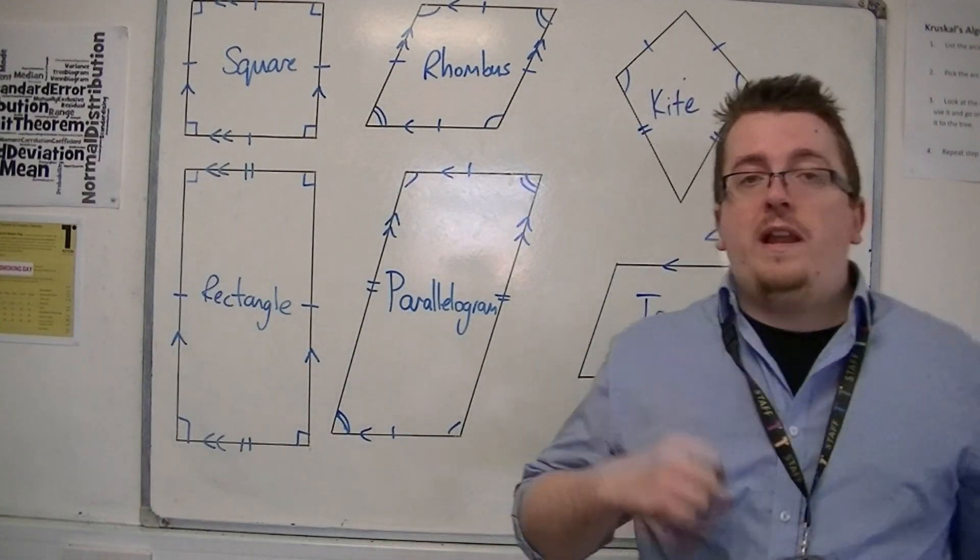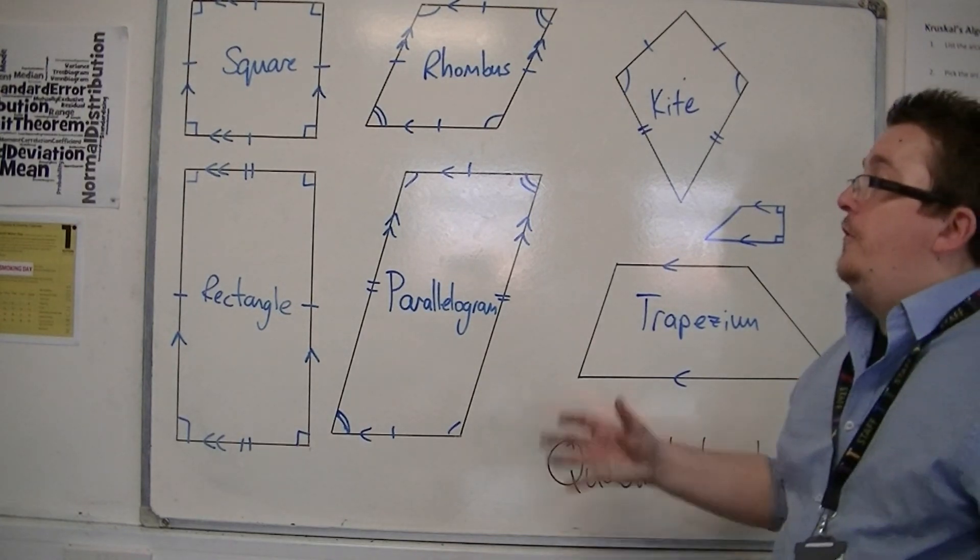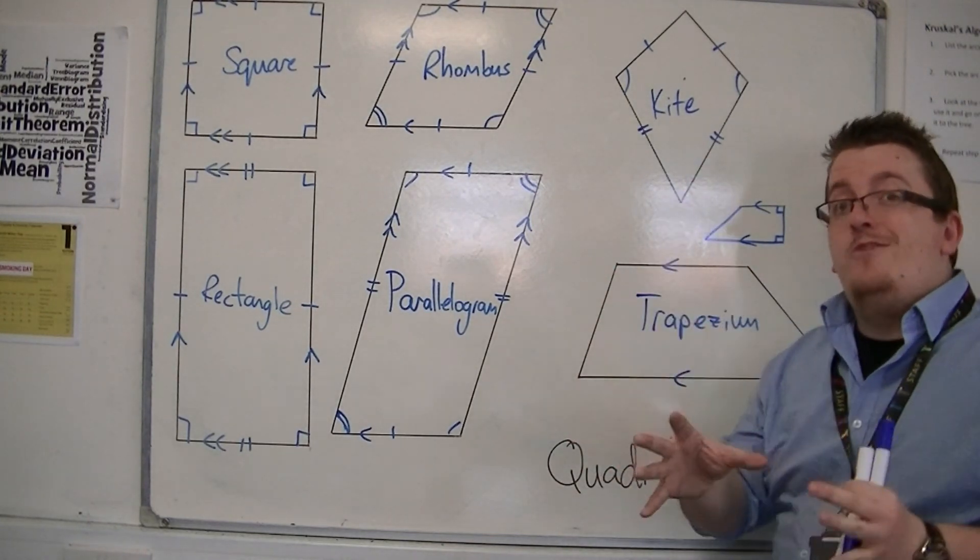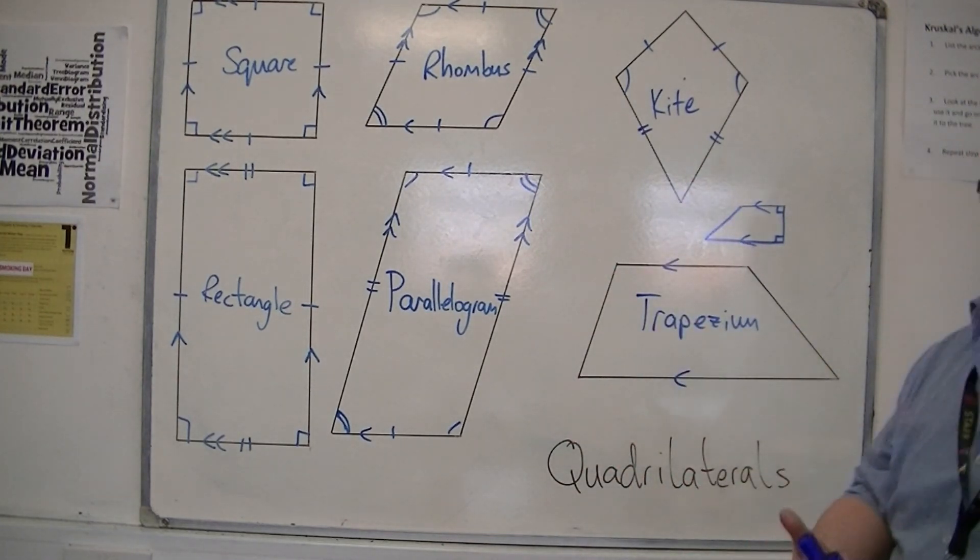So, these are the quadrilaterals. The next stage is going to be being able to find the area for each of these. And that's going to be in the next video.